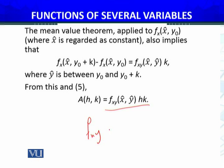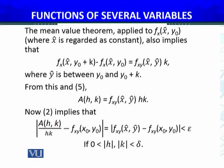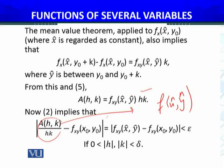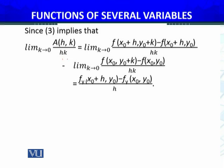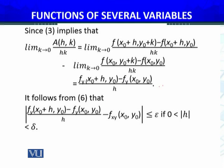From equations 5 and 6, A(h,k) / (hk) can be expressed in terms of f_xy. Using the continuity of f_xy, this quantity is less than ε. Once I take the limit as k→0 and then h→0, I obtain f_yx on one side and f_xy on the other.